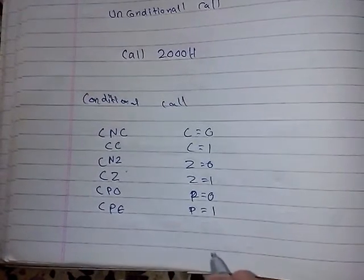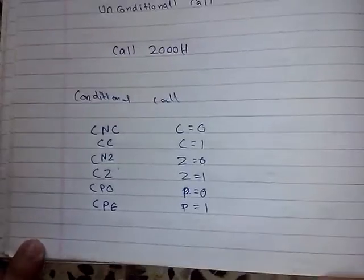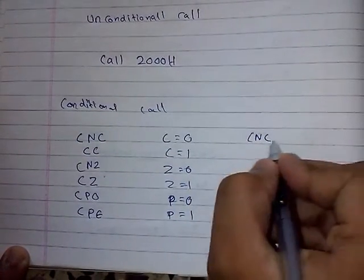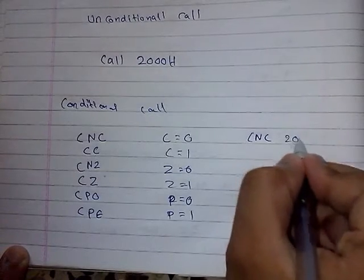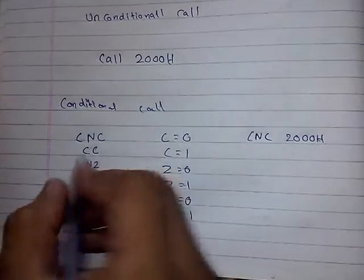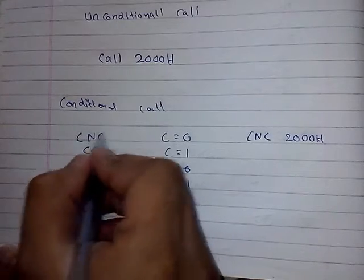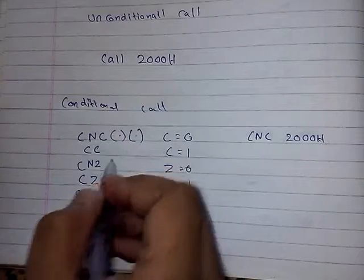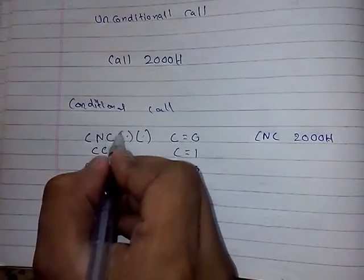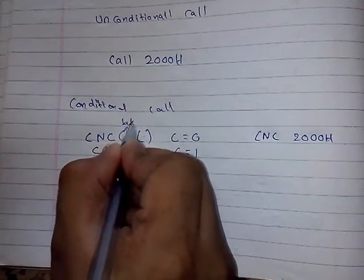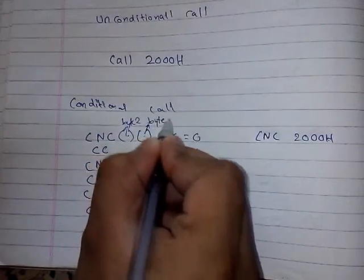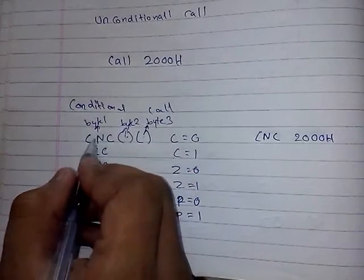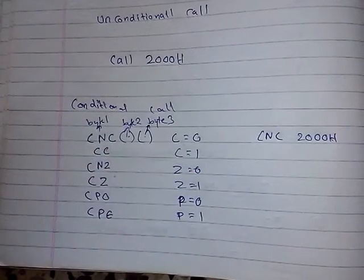We write these instructions like, for example, C and any memory location such as 2000H. All the instructions have a specific format and are three bytes in size — the first byte being the instruction itself.